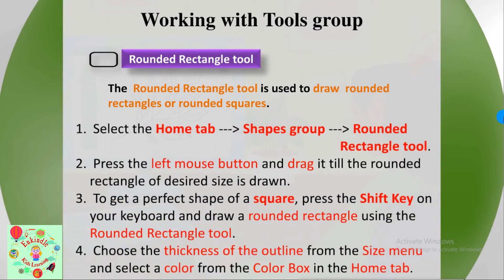The next tool is the rounded rectangle tool. The rounded rectangle tool is used to draw rounded rectangles or rounded squares. Select the Home tab, go to the Shapes group, and find the rounded rectangle tool. Press the left mouse button and drag until the rounded rectangle of desired size is drawn. To get a perfect rounded square, press the Shift key on your keyboard. Choose the thickness of the outline from the Size menu and select a color.